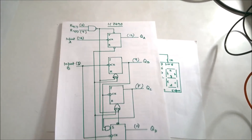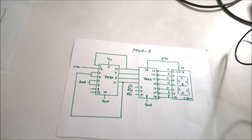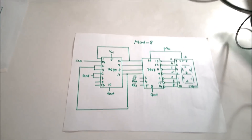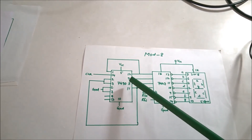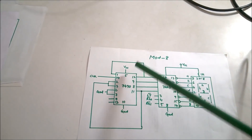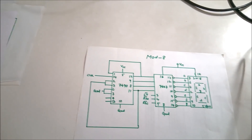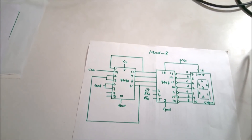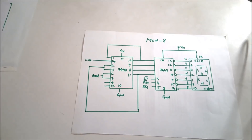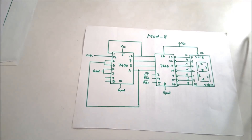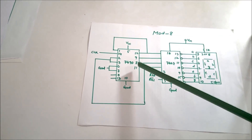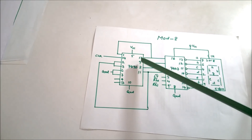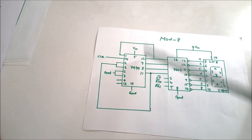In this case, you can see that the most significant bit is pin 11, then pin 8, then pin 9, and pin 12 is the least significant bit. When the output becomes 8 in binary, that means 1, 0, 0, 0.